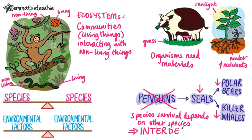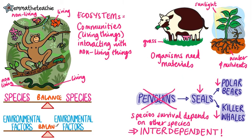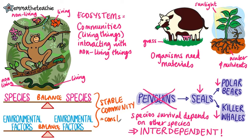Inter just means between, so interdependent is dependence between species. If species are in balance with each other and environmental factors are also in balance, then we call it a stable community. In this community, the population size remains fairly constant because of all of the balance.